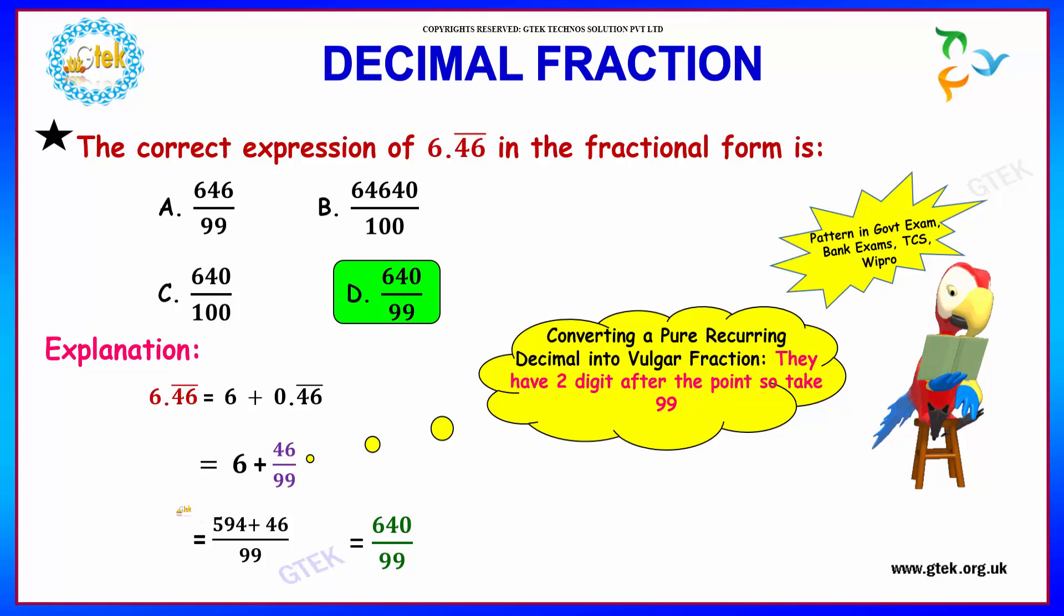Solving this, we get 594 plus 46 over 99, which equals 640 by 99. That is option D. Option D will be your answer. These patterns of questions appear in government, bank, TCS and Wipro exams.